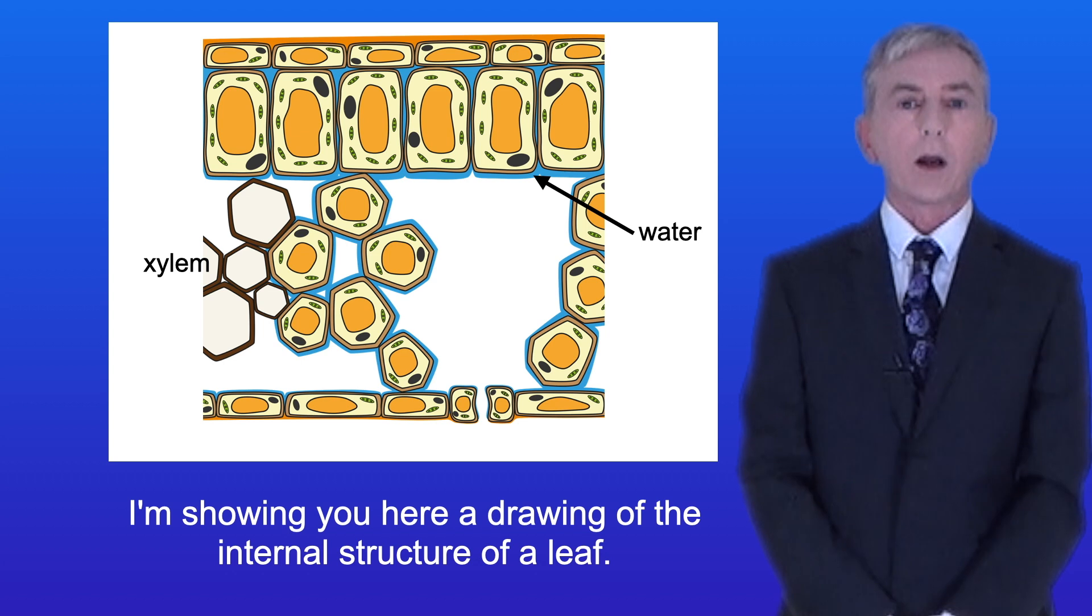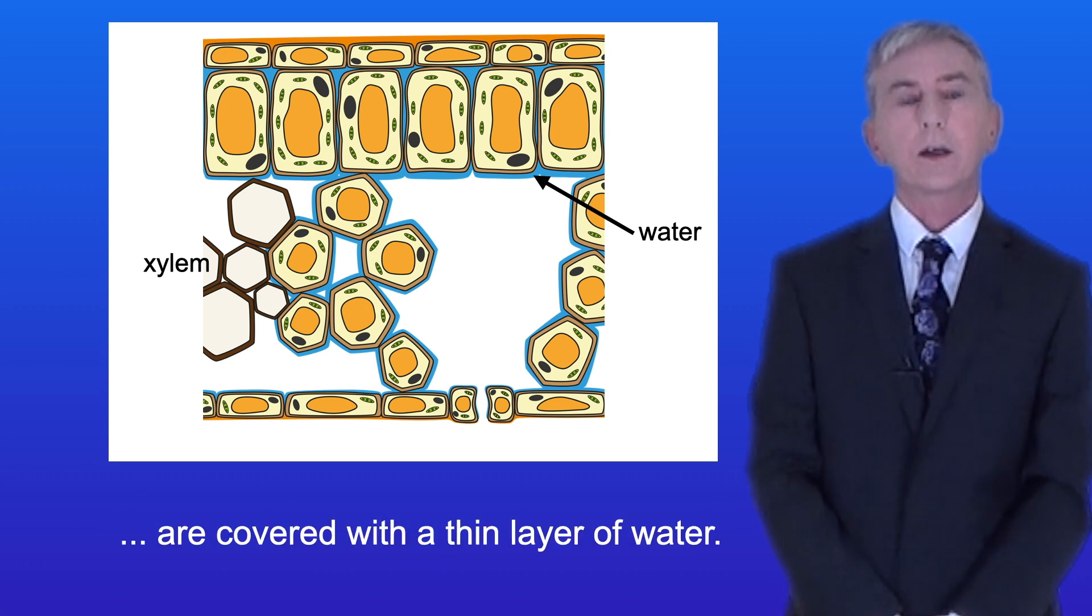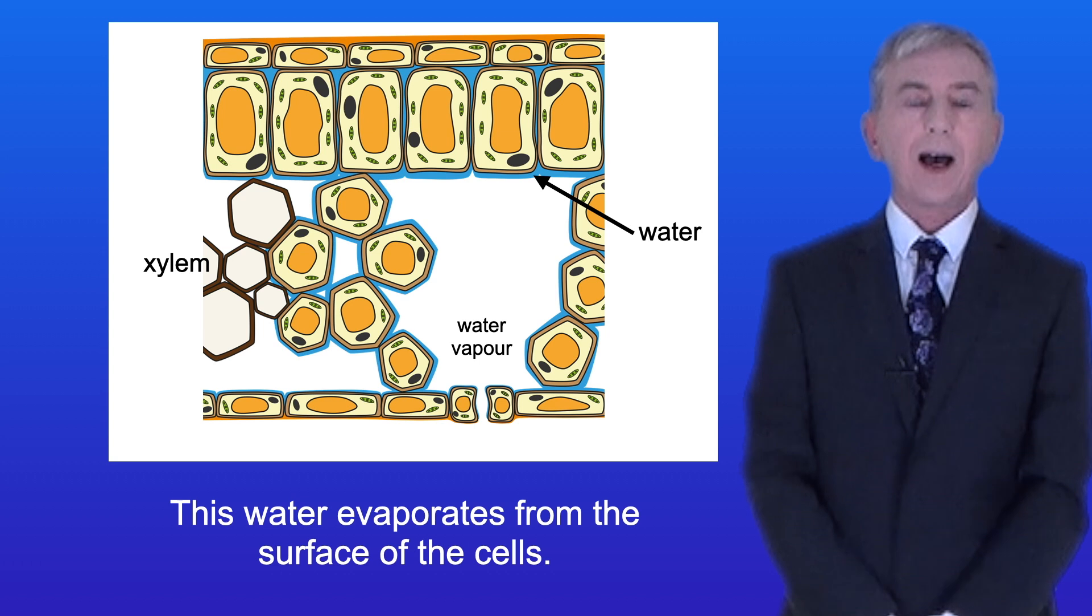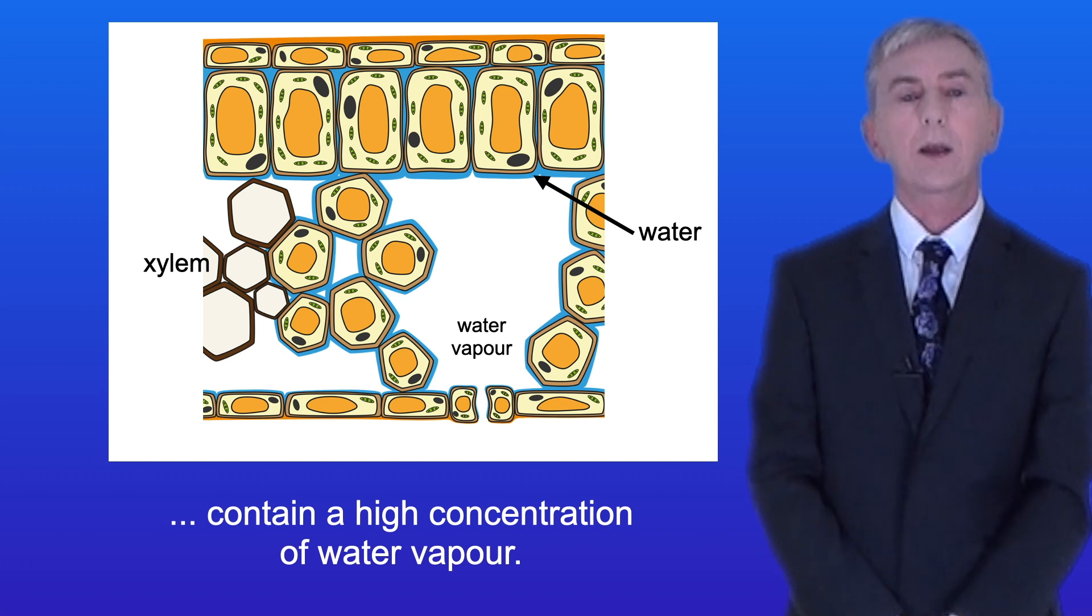I'm showing you here a drawing of the internal structure of a leaf. Now a key idea you need to understand is that the surface of the cells in the leaf are covered with a thin layer of water. This water evaporates from the surface of the cells and because of this the internal leaf spaces contain a high concentration of water vapor.